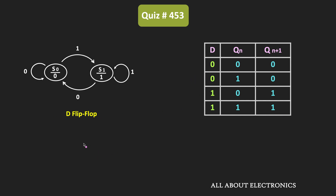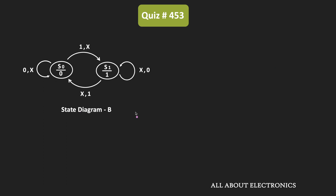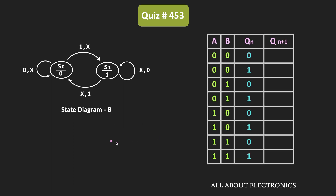Likewise, let us see the second state diagram. In this second state diagram, as you can see, we have a total of two inputs. Let's say the two inputs are A and B, and the present state of the flip-flop is equal to Q. That means for these three input combinations, we have a total of eight different possibilities. The first input corresponds to A and the second input corresponds to B. The meaning of X is that this input can be either zero or one.